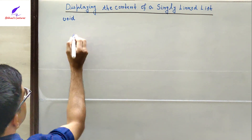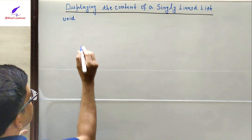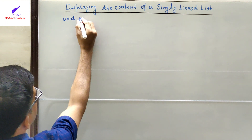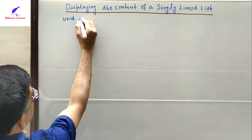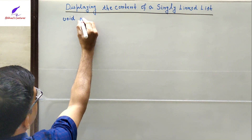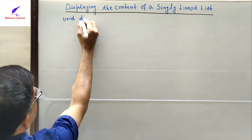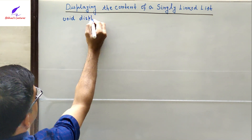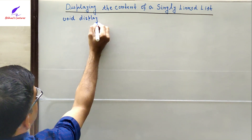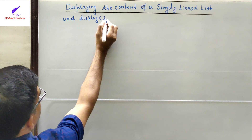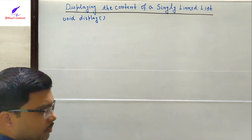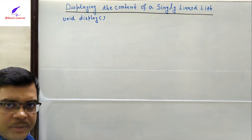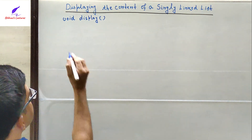The return type of the function is void, meaning it will not return anything. The name of the function is 'display', and it is not accepting any parameters.